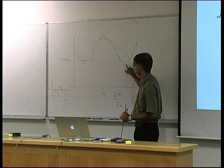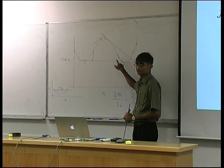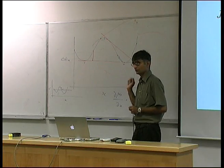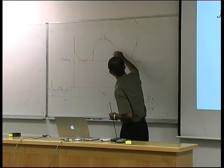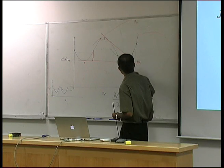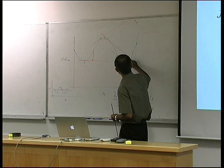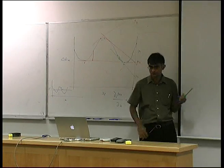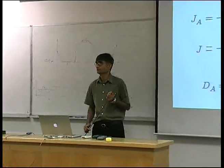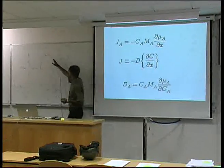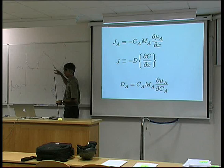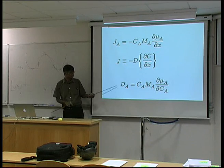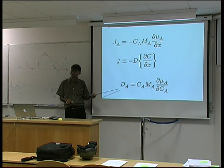Looking at the region which cannot spontaneously decompose - drawing a tangent at that composition, as I increase the concentration of B, mu_B has increased. So when the curvature is the other sign, the diffusion coefficient will be positive. In the spinodal region d(mu)/dC is negative; in the outer region d(mu)/dC is positive. So there must be a point where d(mu)/dC is zero, and the diffusion coefficient becomes zero. Interesting.